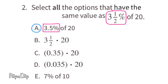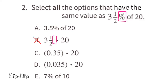Option B: three and a half of 20. That's the same as three and a half times 20, which is not equal to three and a half percent of 20. Three and a half times 20 does not have the same value as three and a half percent of 20, so I would not select B.